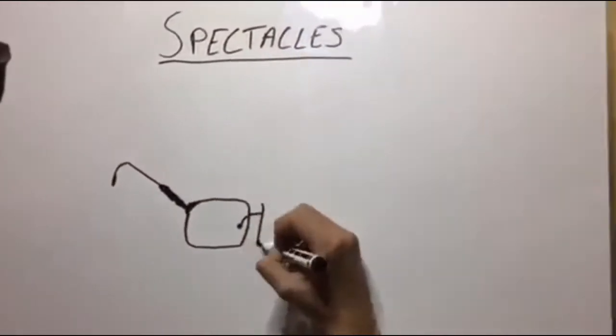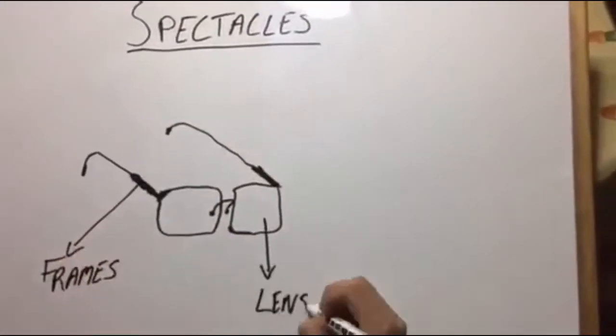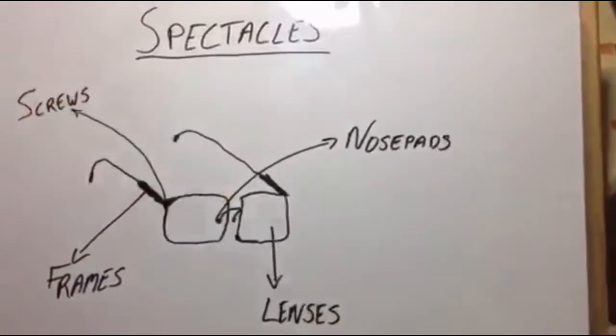We are going to discuss in brief the main components of spectacles. These are frames, lenses, nose pads, and screws.